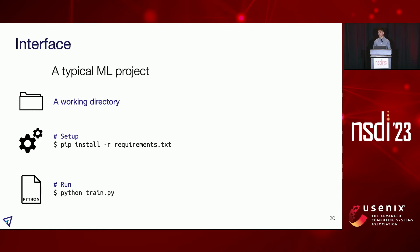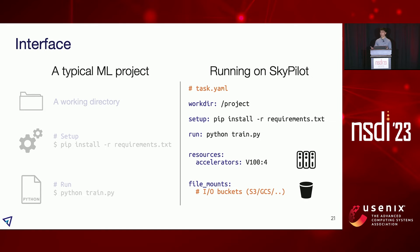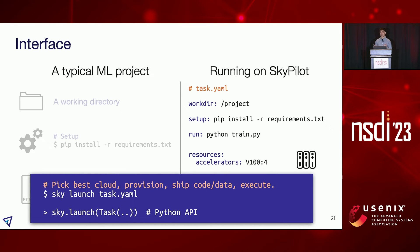In terms of the interface users see, consider a typical ML project: we may have a working directory with code, a setup script installing dependencies, and a main program to run. SkyPilot offers a YAML interface to specify these components, and the user can optionally specify resource requirements. We also offer an interface to specify object store buckets for inputs and outputs. With this specification, the user can use a single CLI command — sky launch — to launch the task to the sky. We also have a programmatic Python API and support for a workflow of tasks.